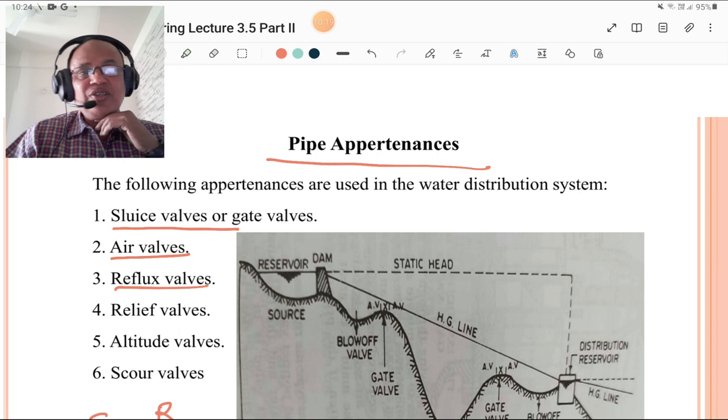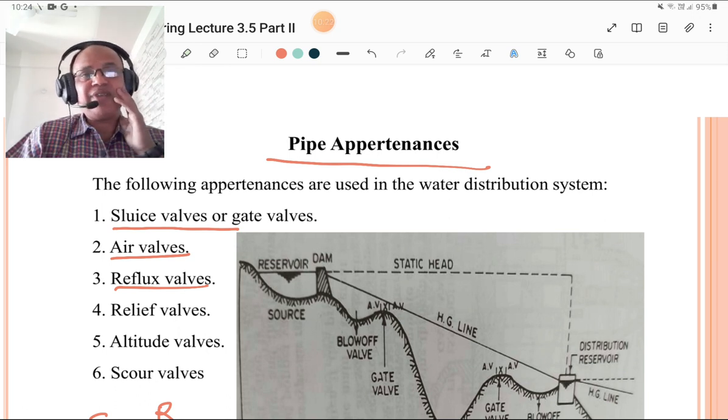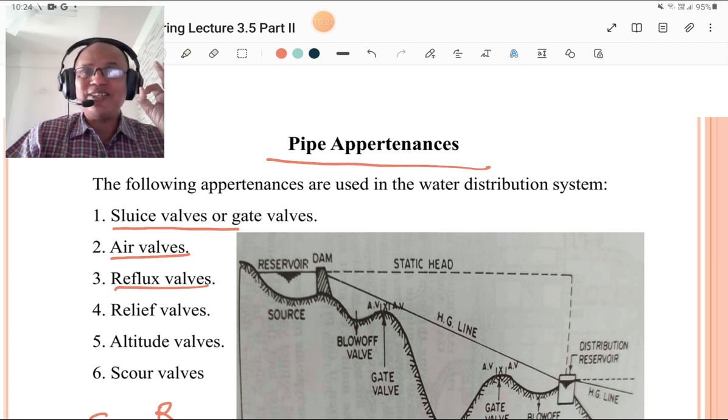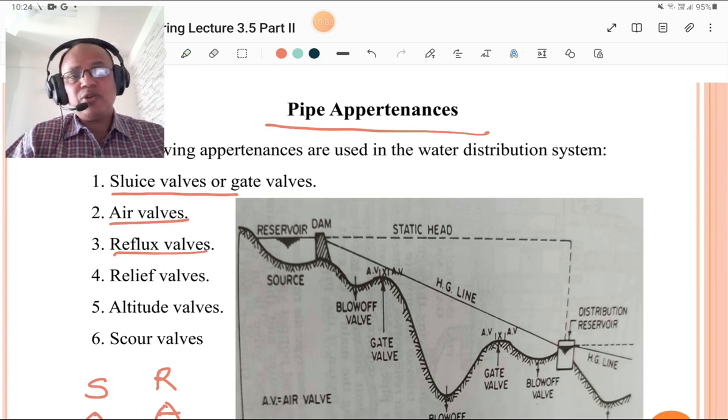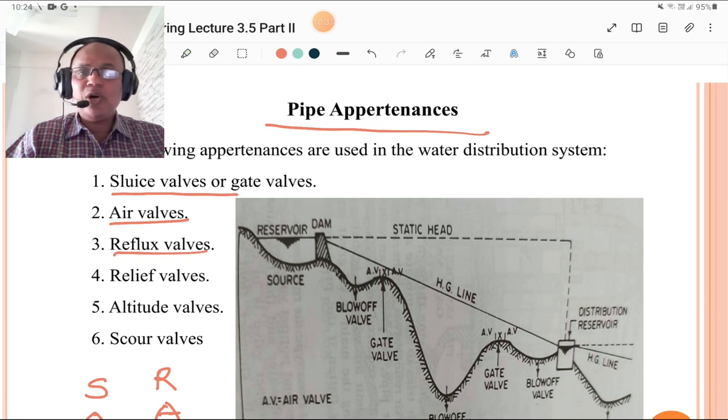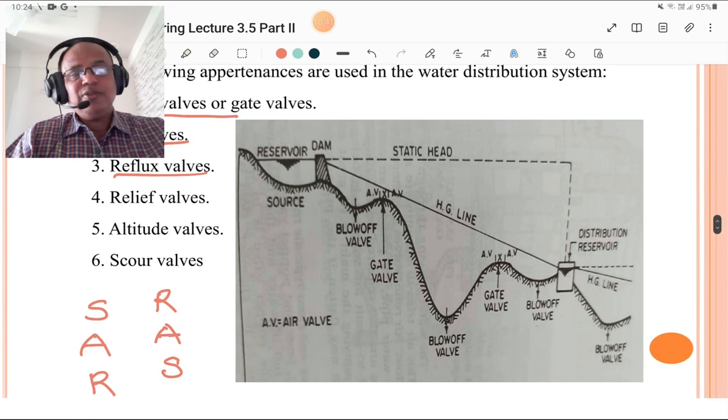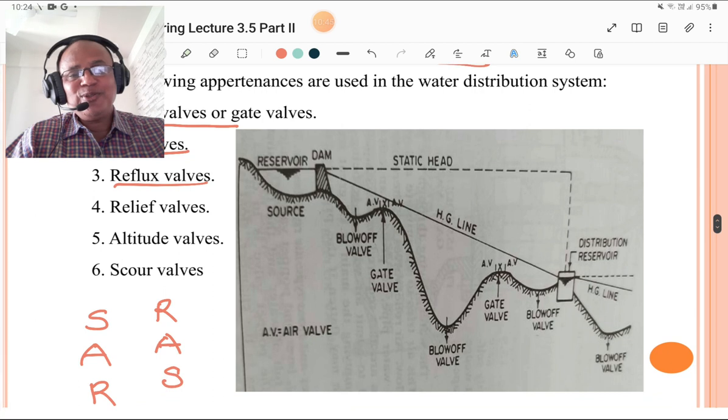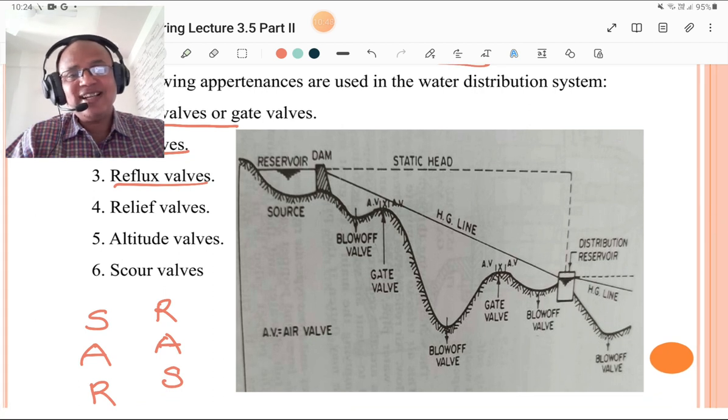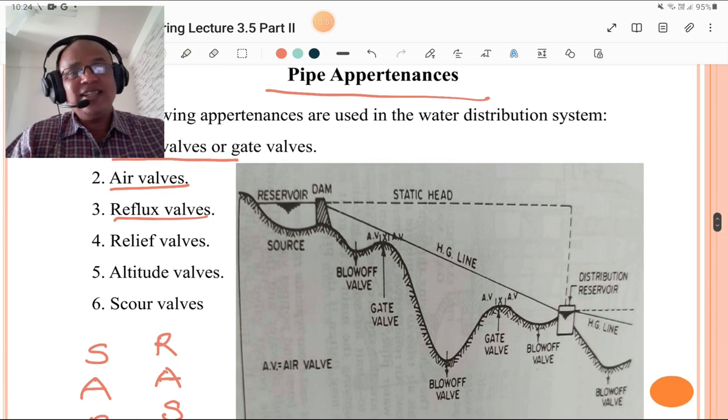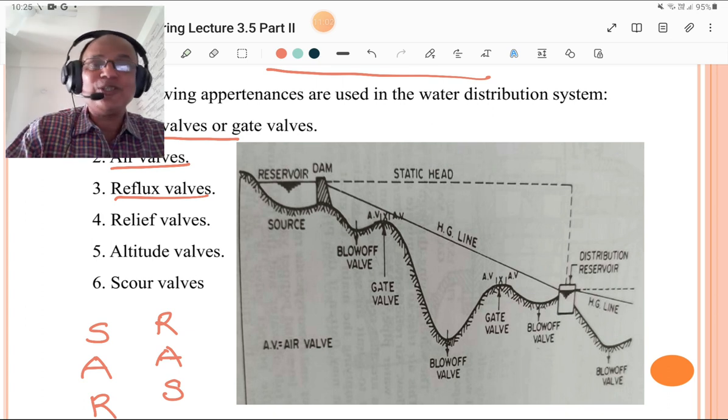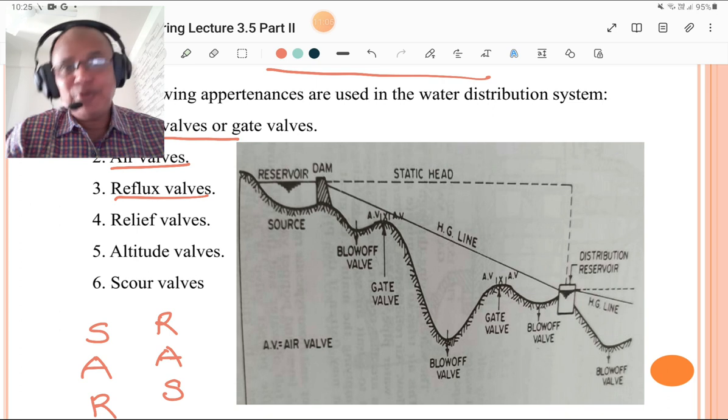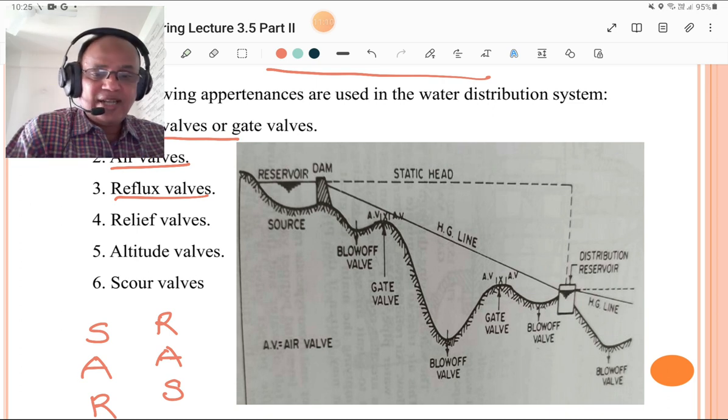We are going to discuss the pipe apparatuses, especially the valves. They are always asked in examination. The following apparatuses are used in water distribution system: First is sluice valve or gate valve, second is air valve, third is reflux valve, fourth is relief valve, fifth is altitude valve, and sixth is scour valve. How to remember this? You know SAR and opposite to SAR is RAS. S is sluice valve, A is air valve, R is reflux valve, R is relief valve, A is altitude valve, and S is scour valve. Remember in this way, so you will get all the valves to be described in your descriptive paper.